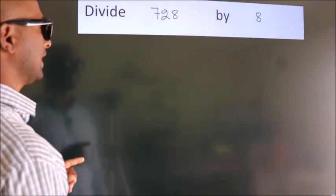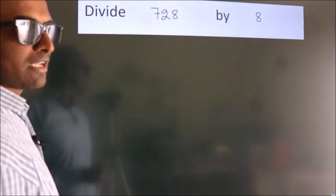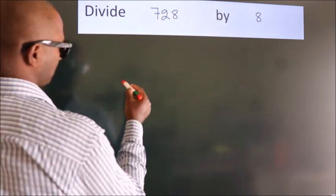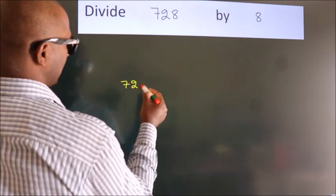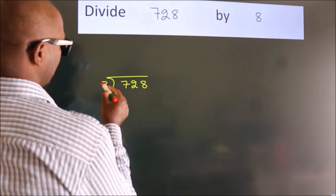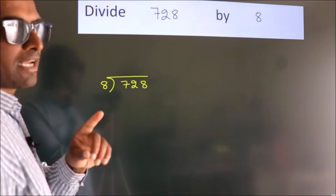Divide 728 by 8. To do this division, we should frame it in this way. 728 here, 8 here. This is your step 1.